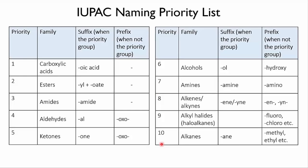So when we have two functional groups in a molecule, the way we solve the naming problem is to make one of them the suffix of the name, and to treat the other one like a substituent. But how to choose which one? Well, IUPAC have come up with this list of priorities for that very purpose. Whichever group is higher up on this list will be the one that determines the suffix of the name, and will be treated exactly like all the examples we've done in previous videos.